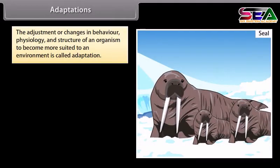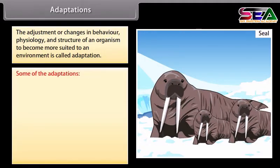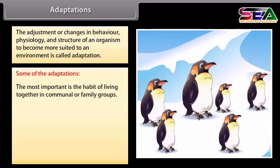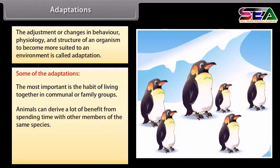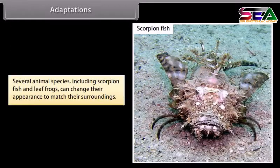The adjustment or changes in behaviour, physiology and structure of an organism to become more suited to an environment is called adaptation. One of the most important adaptations is the habit of living together in communal or family groups. Animals can derive a lot of benefit from spending time with other members of the same species — they can help each other find food, defend against predators, and care for young.